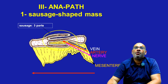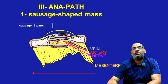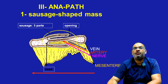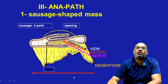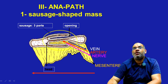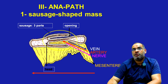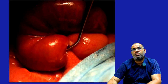For the anatomopathology, we will describe the sausage-shaped mass in which we will have an opening and also a head. But the most important thing in this picture is that we will have a compression not only of the intestinal lumen, but also the mesentery will be compressed with the vein, the artery, and the nerve. And this compression is at the origin of the complication and the gravity of this pathology.